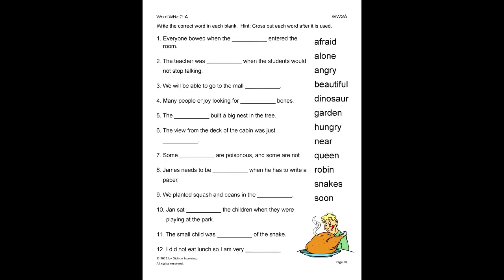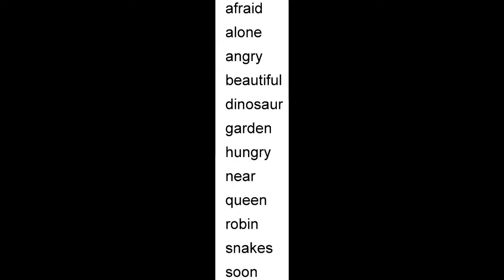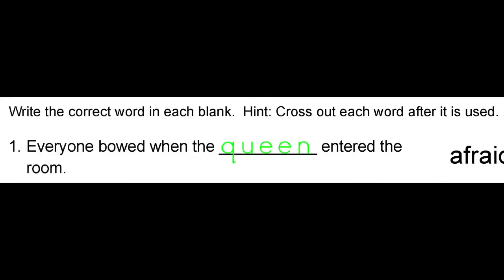On this activity, the student will write the correct word in each blank, cross out each word after it is used. Let's look at number 1. Everyone bowed when the blank entered the room. So we look at the word bank and find that queen is the correct word. So we cross out the used word and write queen neatly in the provided space.